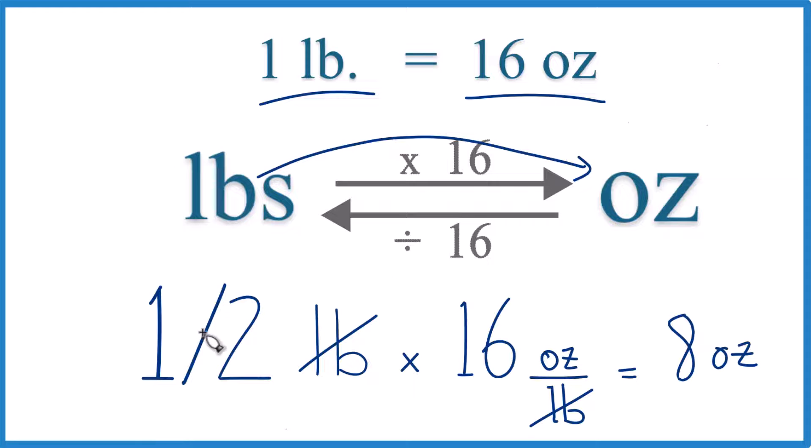The other way you could do this is convert one half to a decimal, be 0.5, and multiply 0.5 times 16 on a calculator. You'll end up with eight ounces again. If you need more help on converting pounds to ounces or ounces to pounds, watch my next video on the topic.